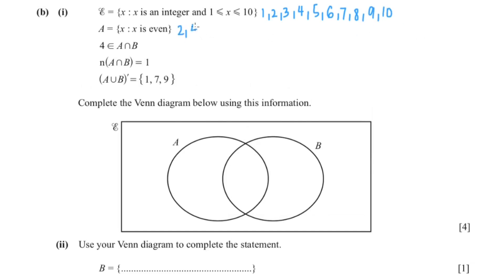Set A are even numbers. So that's 2, 4, 6, 8, and 10. Now they said that 4 is an element of A intersect B. So A intersect B is right over here. So we'll just write 4 there. And the number of A intersect B is 1. So it's only 4.